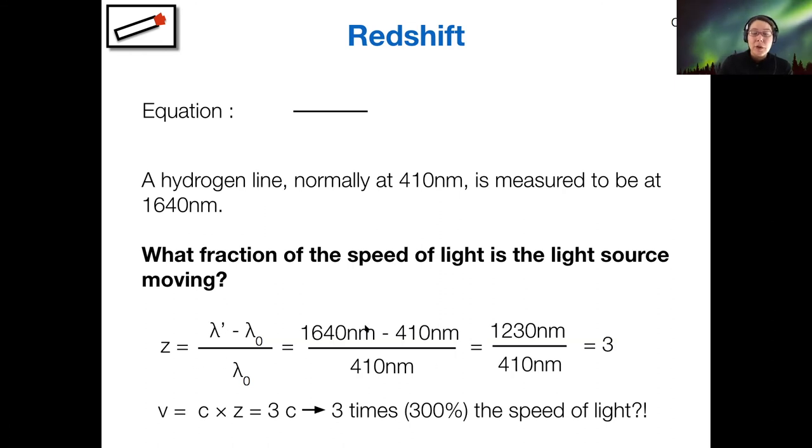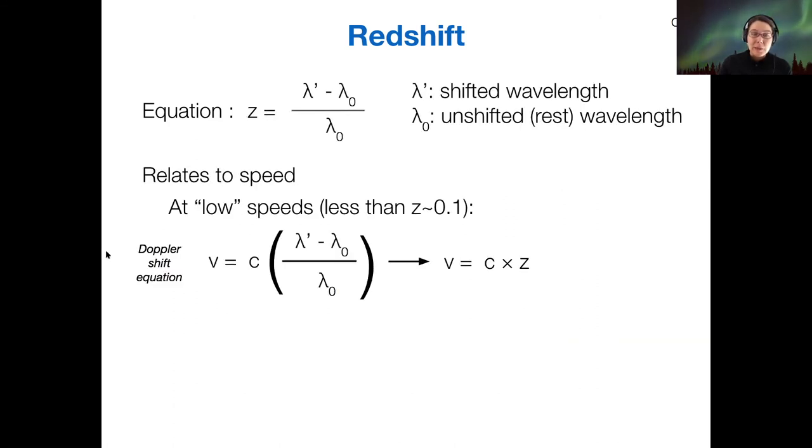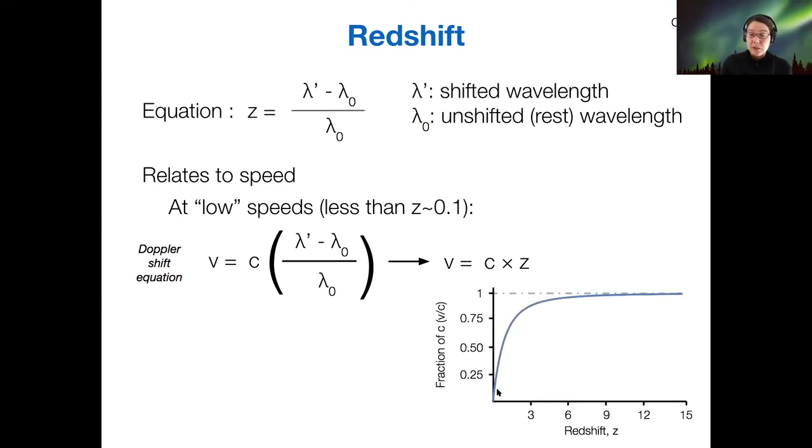Sometimes if you actually do measure spectra that are highly redshifted, you will end up with this result, a faster than speed of light result. Don't worry, it doesn't mean that the object is actually moving faster than the speed of light. It just means that this particular equation for Doppler shift only applies at low speeds. So it only applies at redshifts less than about 0.1. And for objects faster than a redshift of about 0.1, this linear relationship we see here in the bottom corner. So here's what I mean here.